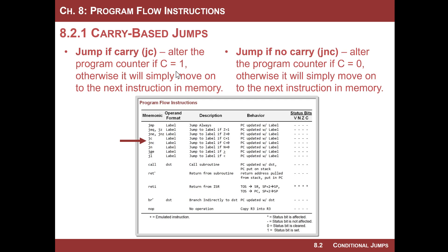When it does not jump — for example, if you do jump if carry and the carry flag was not set — the program counter simply marches on to the next instruction that resides immediately after it in memory. You have two program flows: if the condition is true, the program counter jumps to a new location; if the condition is false, it will simply march on.